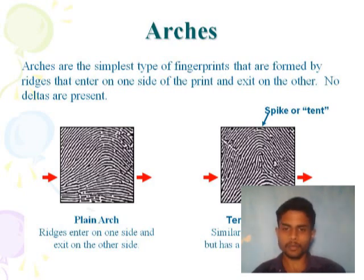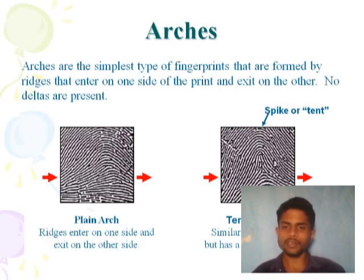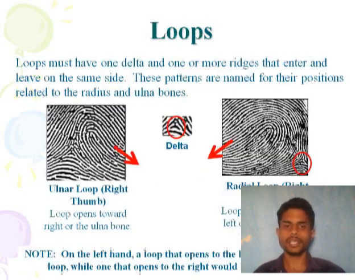In the tented arch, the ridge enters and then exits on the second side, but the tented portion rises upward in between the pattern.